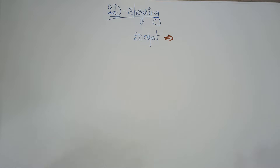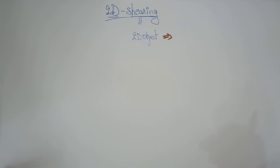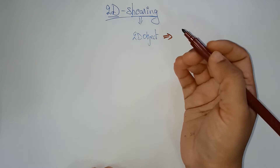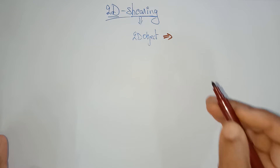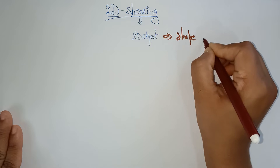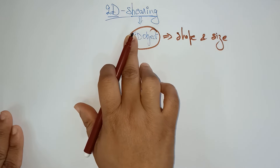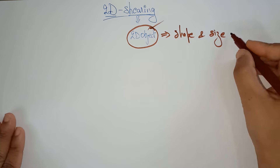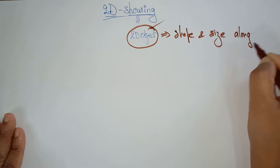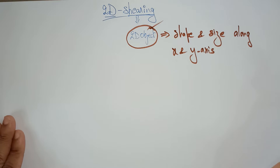Hi students, welcome back. In the previous video we had discussed about some of the transformations in computer graphics. Now let's have a look at another type of transformation used in computer graphics: 2D shearing. Shearing deals with changing the shape and size of a 2D object along the X and Y axis.